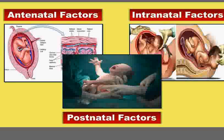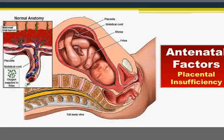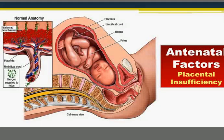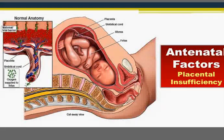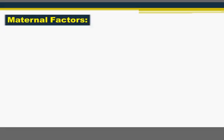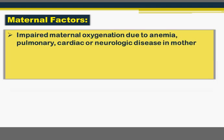Regarding antenatal factors, one of the most important is placental insufficiency — anything interfering with placental vascularization or supply to the baby while inside the uterus may cause birth asphyxia. Antenatal causes can be divided into maternal factors. First, impaired maternal oxygenation due to anemia, pulmonary diseases, cardiac or neurologic diseases — there will be hypoxia in the mother that, while not harmful at the maternal level, results in defective oxygenation reaching the baby.